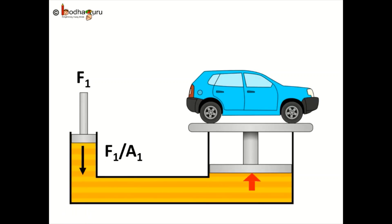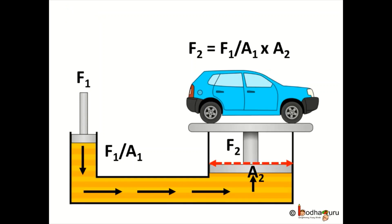Now this pressure will transmit equally throughout the fluid and reach the larger tube. Now here in the larger piston the pressure would be F1 by A1. So the total force working on the larger piston would be F2, and force as we know is pressure multiplied by total area. Here pressure is equal to F1 divided by A1 and area is equal to A2. So what is F2? F2 is equal to force divided by area, so this becomes equal to F1 divided by A1 multiplied by A2.